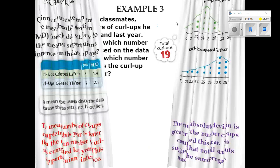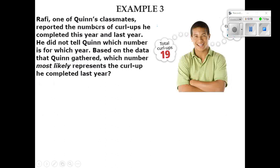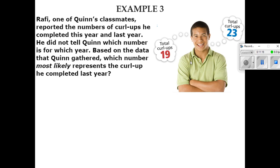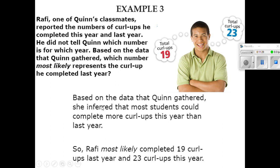Example number three. Rafi, one of Quinn's classmates, reported the number of curl-ups he completed this year and last year. He did not tell Quinn which number is for which year. But based on the data that Quinn gathered, which number most likely represents the curl-ups he completed last year? Well, we can see that he's saying that it was either 19 or 23. And since we know that more kids did better on the second year, we can say that the 19 curl-ups were probably from last year. Based on the data that Quinn gathered, she inferred that most students could complete more curl-ups this year than last year. So Rafi most likely completed 19 curl-ups last year and 23 curl-ups this year.